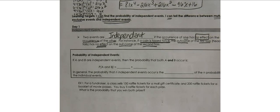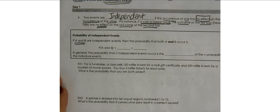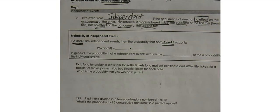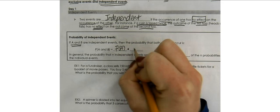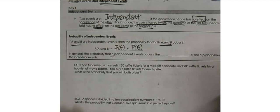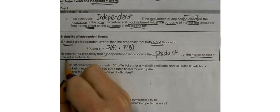So how do you find the probability? The probability of independent events — let's call them A and B. The probability of A and B is equal to the probability of A times the probability of B. For example, the probability of flipping a coin and landing on tails is one-half, times the probability of landing on tails again, which is one-half, giving one-fourth. In general, the probability that N independent events occur is the product of the N individual probabilities.